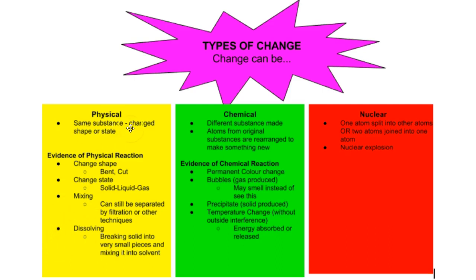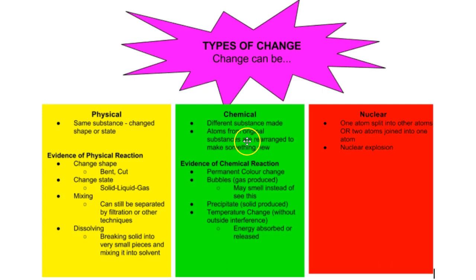At the very beginning we talked about the difference being that with physical changes you have the same substance — it's just changing shape or changing state, but it's still the same substance. So water can go to ice and back to water; it hasn't changed the chemical — it's still H2O, just in a different state. The difference with chemical change is that you make something new from the old substance or substances, rearranging them at the atomic level, and that's what we're going to quickly review right now.